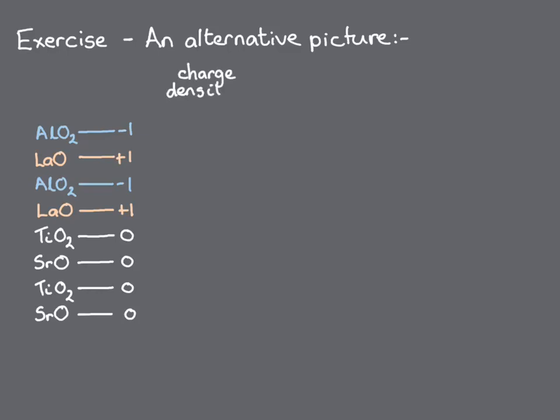So, if we look at the layer charge density as a function of position across an LAO-STO heterostructure, then it's zero through the strontium titanate slab, and then alternates between +1 and -1 in the lanthanum aluminate slab.